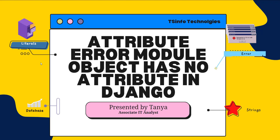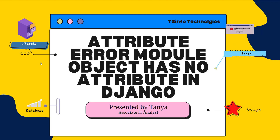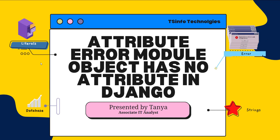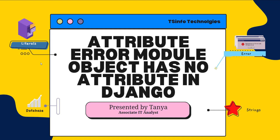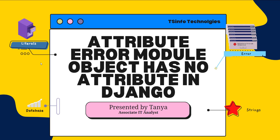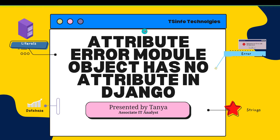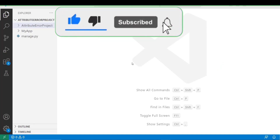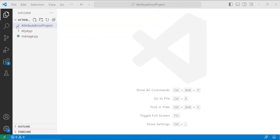Hello everyone, welcome to the channel. Today in this video we are going to learn about the AttributeError 'module object has no attribute' in Django. We are going to see an example of how this error occurs and how we solve it, so let's proceed and learn with the help of an example.